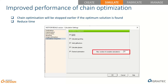Another improvement relates to optimization of steel members. Now, if subsequent iterations do not modify the proposed optimal section, no further calculations are performed for the remaining iterations. This reduces analysis time. The entered number of iterations is now the maximum number of complete calculations — if the section converges after fewer iterations, the process stops early.